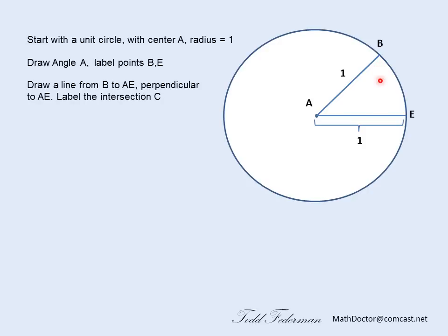Next up, we're going to drop a perpendicular line from B down to the radius AE. The reason why we're doing this is we want to create a right triangle and look at the trig ratios. We're going to call the intersection point C.